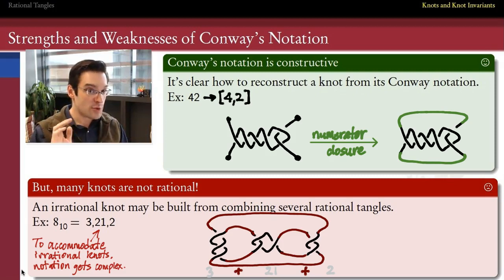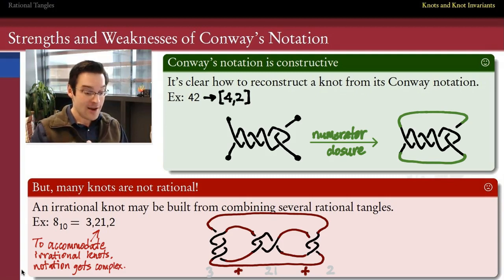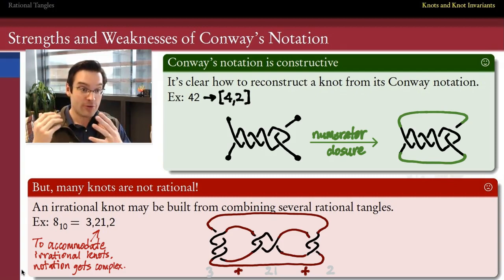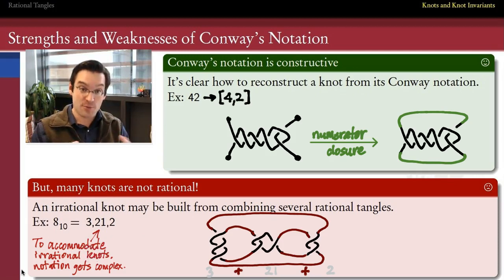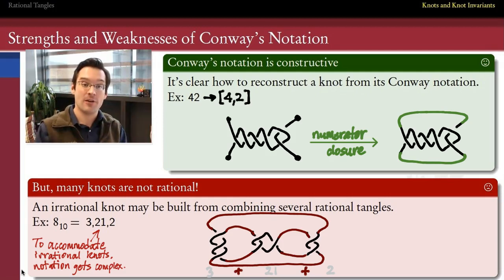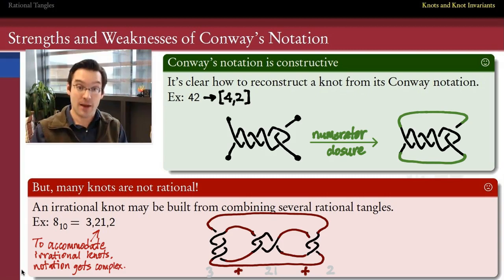Conway notation is super powerful, and you'll see it in many atlases and field guides to prime knots because it is so convenient and constructive. We now have a recipe for how to go from Conway notation back to knots, though the recipe gets more complicated when the knots themselves are not rational but have rational pieces. There are extra features of Conway notation that can tell us how to stitch together several rational tangles to make a knot that, when closed up, gives us even a non-rational knot.